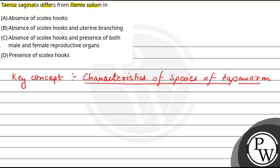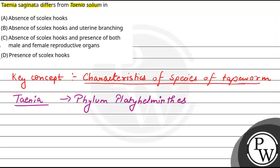If we talk about these two differences, we first talk about tapeworm. The scientific name is Taenia. This belongs to the phylum Platyhelminthes. So Taenia saginata and Taenia solium are two different species.